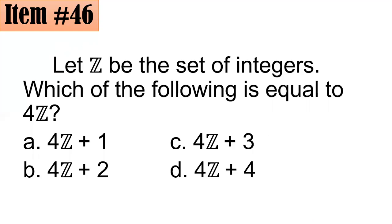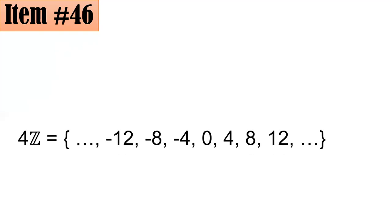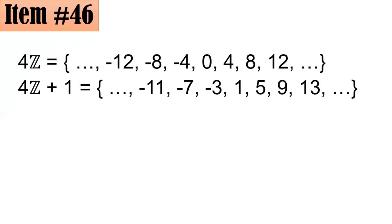Item 46. Let Z be the set of integers. Which of the following is equal to 4Z? Is it 4Z plus 1, 4Z plus 2, 4Z plus 3, or 4Z plus 4? So if this is the original 4Z, when we say 4Z plus 1, each term of 4Z, which is in fact the set of multiples of 4, integral multiples of 4. If you add 1 to it, so you have to add 1 to each term like this. Negative 12 plus 1, that's negative 11. Negative 8 plus 1, negative 7. Negative 4 plus 1, negative 3, and so on, until 12 plus 1, 13, and so on. So you could actually have this going to the left and going to the right further. But if you could see, the terms here are not equal. So 4Z plus 1 is wrong.